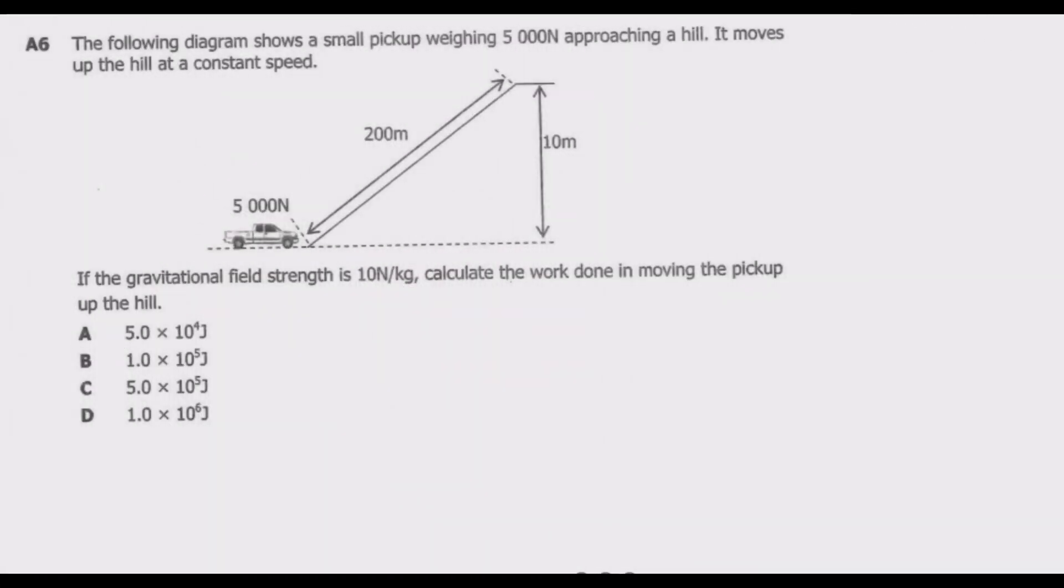The following diagram shows a small pickup weighing 5,000 Newton approaching a hill. It moves up the hill at a constant speed. If the gravitational field strength is 10 Newton per kg, calculate the work done in moving the pickup up the hill.